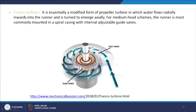The Francis turbine is essentially a modified form of propeller turbine in which water flows radially inwards into the runner and is turned to emerge axially. For medium head schemes, the runner is most commonly mounted in a spiral casing with internal adjustable guide vanes. These are the different types of turbines used in hydropower production.